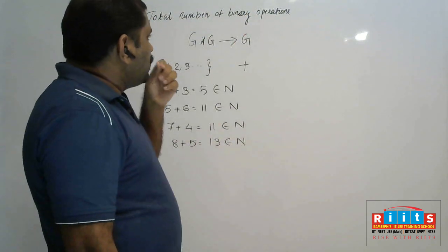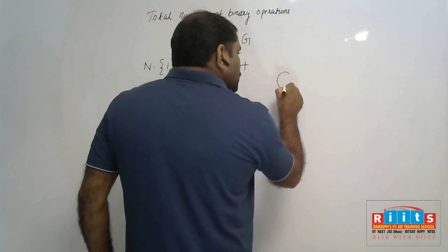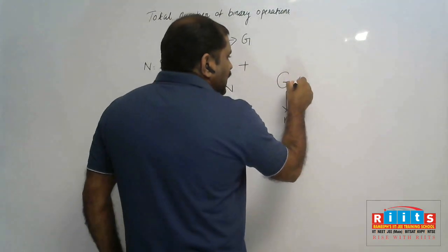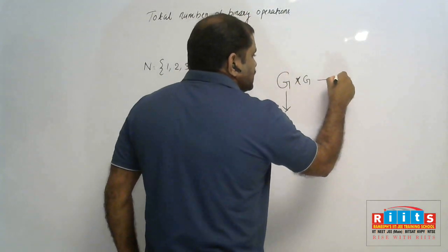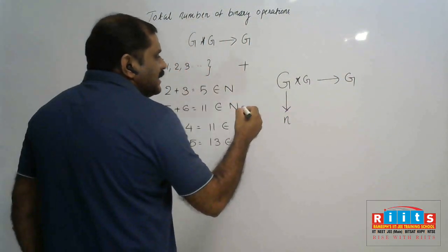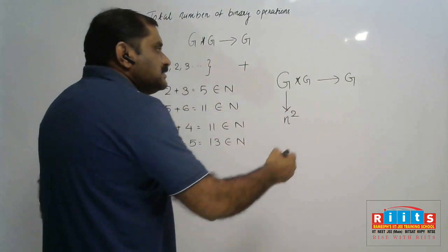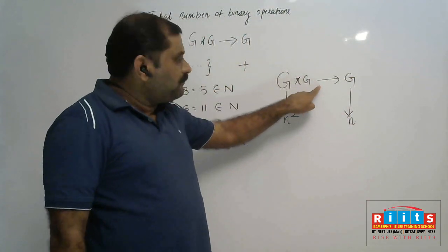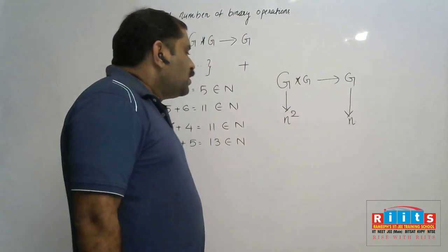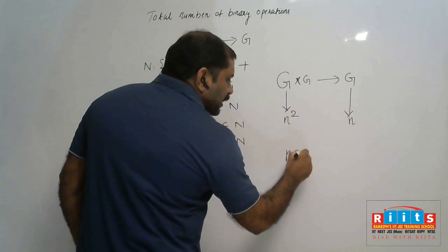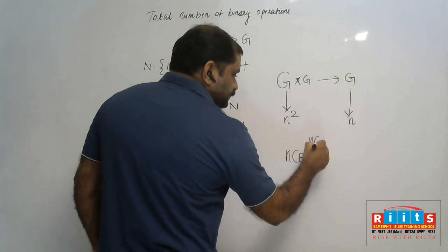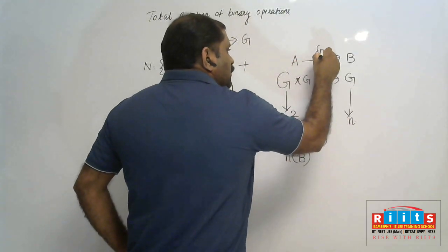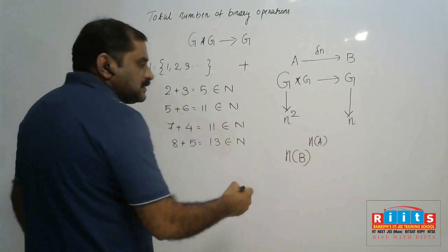Now, the total number of binary operations defined on a set: if G is a non-empty set containing n elements, then G star G maps to G itself, and G star G contains n squared elements (n into n). The total number of different functions that can be defined from set A to set B is equal to N(B) raised to the power N(A).